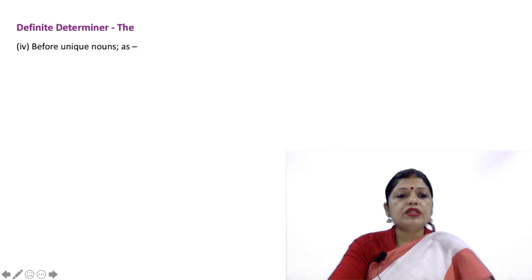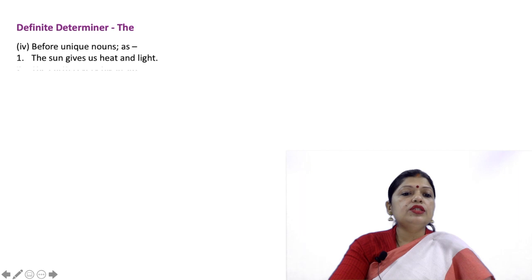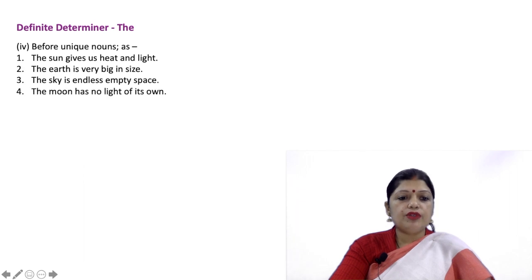Before unique nouns: The sun gives us heat and light. The earth is very big in size. The sky is endless empty space. The moon has no light of its own.